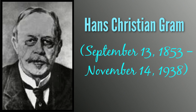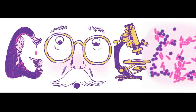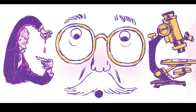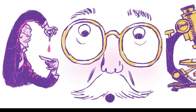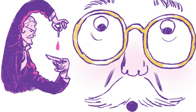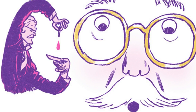Graham stain, or Graham staining, also called Graham's method, is a method of staining used to distinguish and classify bacterial species into two large groups: Graham-positive and Graham-negative.